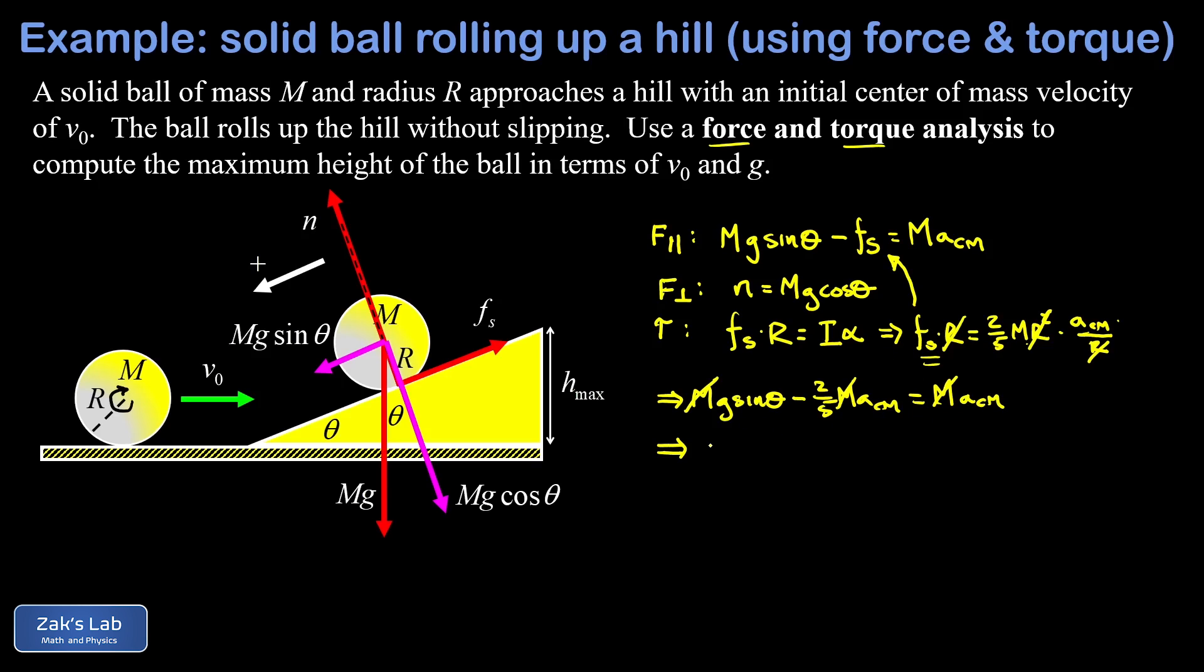So I have g sinθ equals 7/5 a center of mass, and this means my center of mass acceleration for the ball on its way up is going to be 5/7 g sinθ. So that's a nice little detail about the motion that we don't get from an energy analysis. The force and torque analysis is generally deeper but it ends up being more difficult as a result.